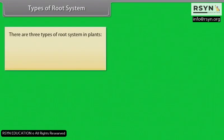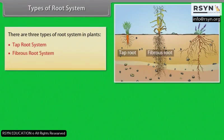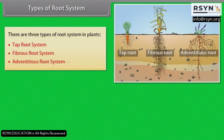There are three types of root system in plants: tap root system, fibrous root system, and adventitious root system.